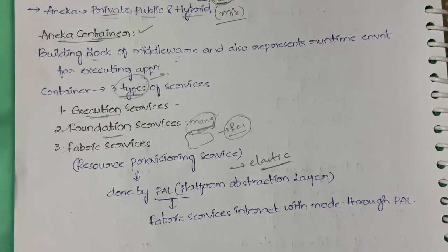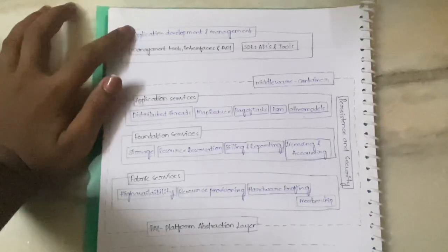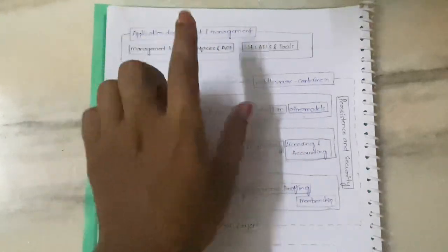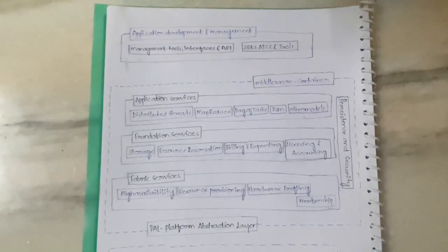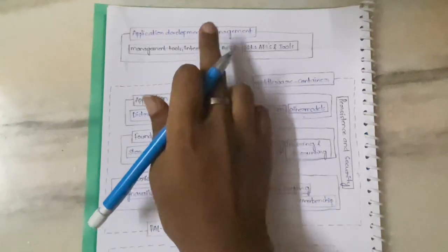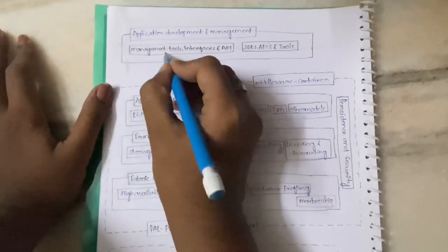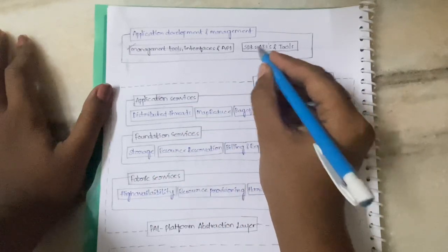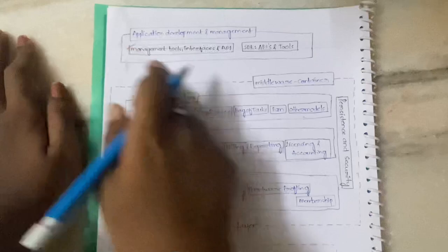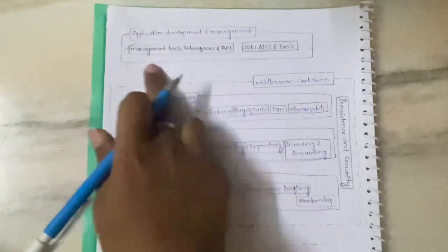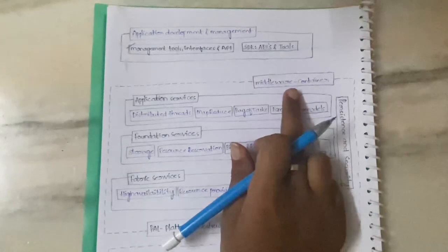Now I will show you the architecture diagram of Aneka. On seeing this diagram you'll get clarity on how things are organized. At the top you have Application Development and Management — in Management you'll have tools, interfaces, and APIs. As I mentioned, Aneka provides APIs for business logic abstraction, and also a tool for managing the cloud. In the Software Development Kit section you'll also have APIs and tools.